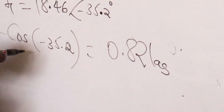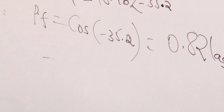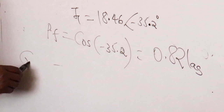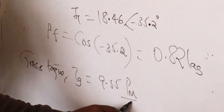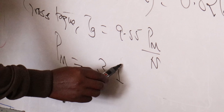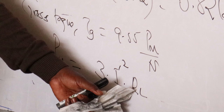The next question asked for full load gross torque. Gross torque Tg equals 9.55 Pm over N. For a three-phase motor, Pm equals 3 times I2 prime squared times RL. Get I2 prime in polar and use it. With RL = 14.76 ohms, and I2 prime approximately 15.1 A, you get Pm approximately 10163.26 watts.